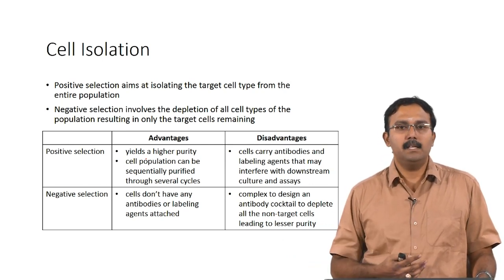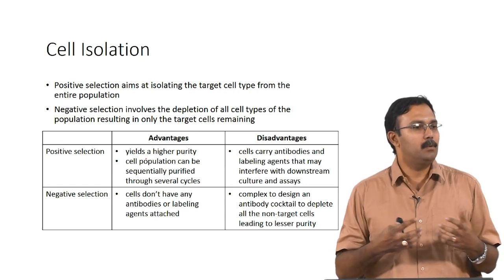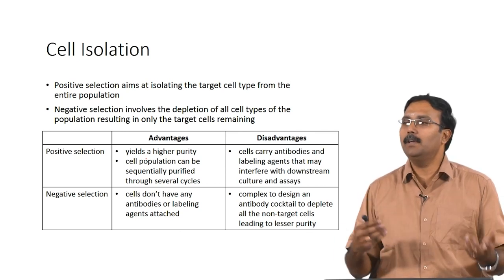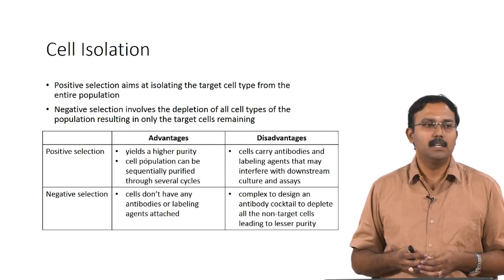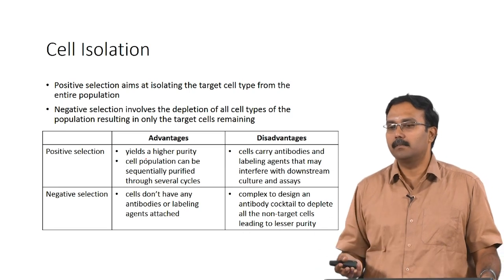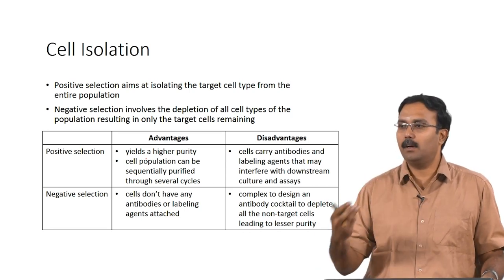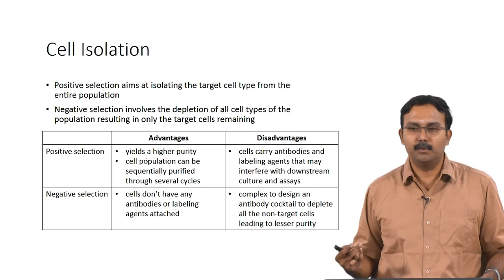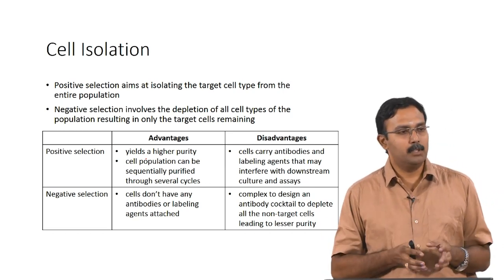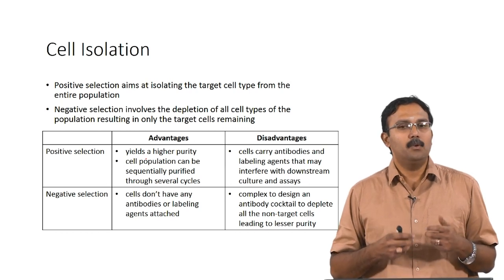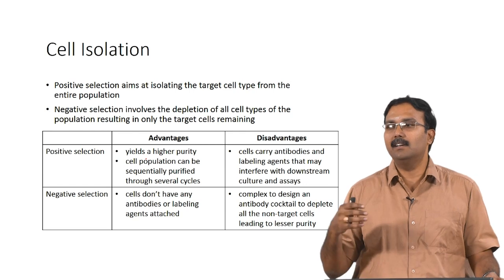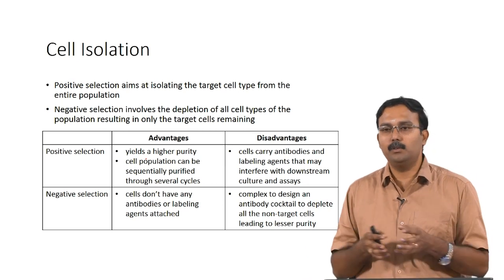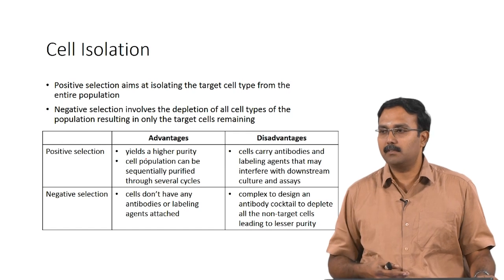In negative selection, the problem is it is very complex to design a cocktail that will remove everything except the cell you are interested in — you need to target so many different cell types, making it a difficult process. Because of this, you end up with something of lesser purity. However, the advantage is the cells will not have any antibodies or labeling agents attached. Both approaches have their own advantages and disadvantages, and you would choose based on the required purity, whether cells should have no antibodies attached, and how you are going to use the cells.